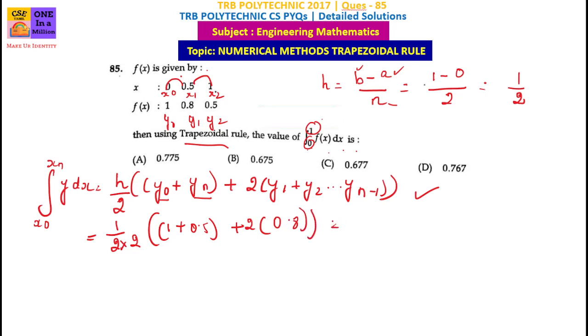h is equal to 1 by 4. 1 plus 0.5 is 1.5, plus 2 into 0.8 is 1.6. Next, add them: 1.5 plus 1.6 is 3.1.